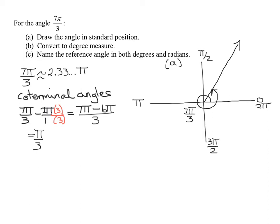I've drawn my angle in standard position. Now I need to convert it to degree measure, the 7π over 3. So remember the conversion factor is π radians equals 180 degrees. So I'm going to use dimensional analysis. So I have my 7π over 3 and I'm going to put radians on it, so I can use my dimensional analysis.